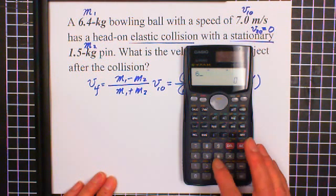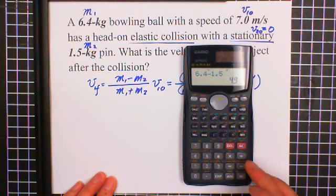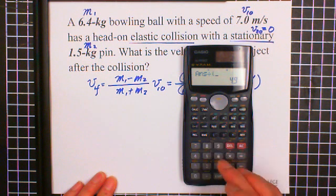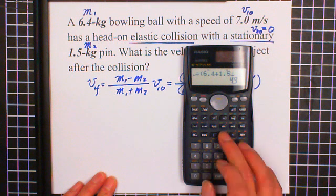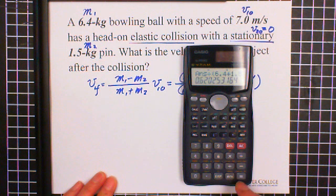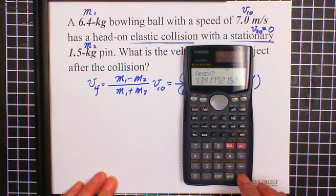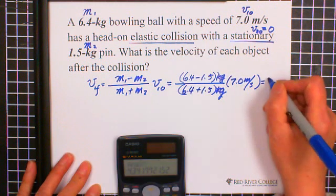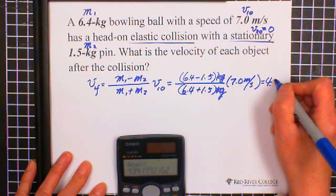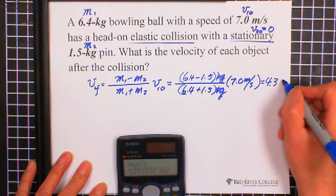6.4 subtract 1.5 equals 4.9 divided by the bracket bottom is 6.4 plus 1.5, close bracket, equals 0.62. And times the initial velocity of the first object is 7. We got 4.34, keep two significant figures, we write 4.3 meters per second.